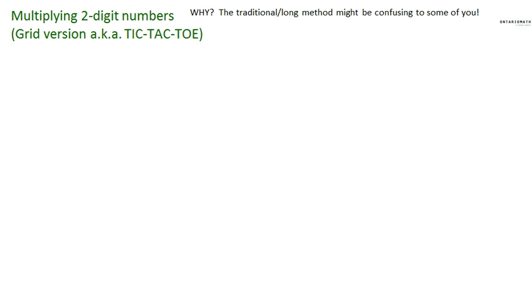Why am I showing you this version? Because the traditional or long method that I learned — or your parents learned — might be confusing to some of you, so I wanted to show you a different way to multiply two-digit numbers. It's a version that hopefully you'll understand pretty quickly, and when your parents look at it, they may say, 'I wish I learned it like this as a kid, because I would totally remember.' Even some adults have struggled at multiplying two-digit numbers. Here's a different way to show you.